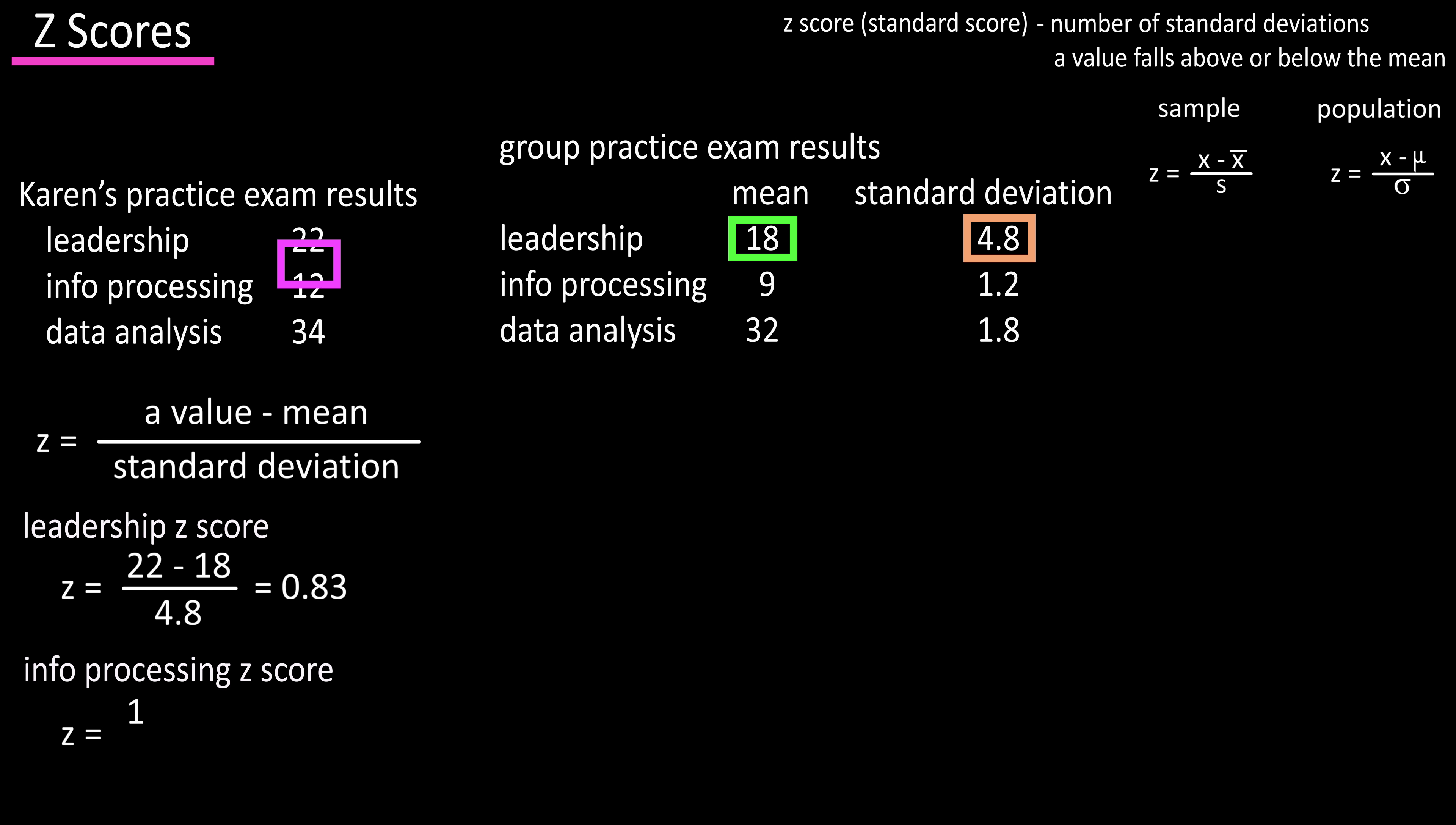For info processing, she scored a 12 minus the mean of 9, and divide by a standard deviation of 1.2, and we get 2.5.